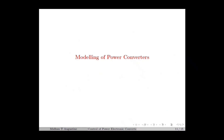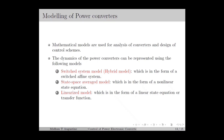Next, we move on to the modeling of the power converter. A mathematical model is a set of mathematical equations that capture the dynamics of the system. Mathematical models are used for analysis of the converter and design of control schemes. The following models are used to represent the dynamics of the converter: the switched system model, which is in the form of a switched affine system; the state-space average model, which is in the form of a nonlinear state equation; and the linearized model, which is in the form of a linear state equation or transfer function. These models offer different ranges of complexity and accuracy. The linearized model is the simplest but least accurate, while the switched system model is the most complex but most accurate. In the next few lectures, we will discuss each of these three models in detail, including their derivation.